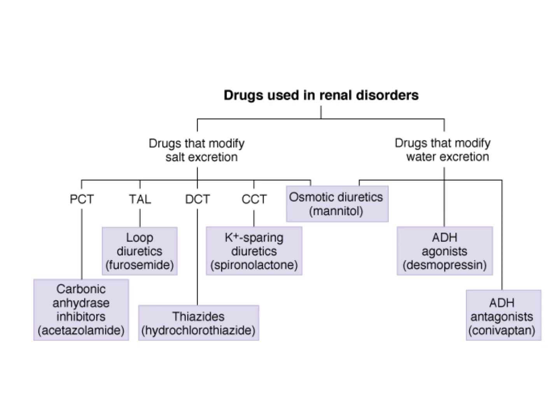Another classification of diuretics used for renal disorders includes drugs that modify salt excretion. This is subdivided into the proximal convoluted tubule, like carbonic anhydrase inhibitors; the thick ascending loop, like furosemide; the distal convoluted tubule, like the thiazide family; and the collecting tubule, which involves potassium-sparing diuretics.